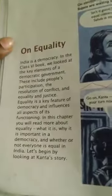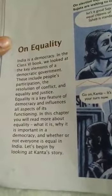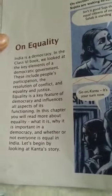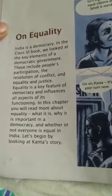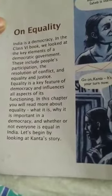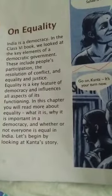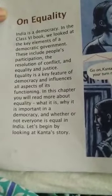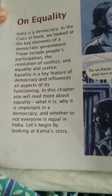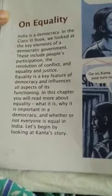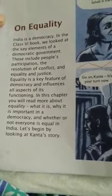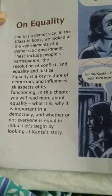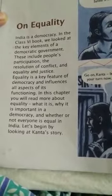Now we are going to learn about another topic in this chapter. This includes people's participation. The elements of democratic government are: first, people's participation through elections; second, the resolution of conflicts; and third, equality and justice. Equality is a key feature of democracy and influences all aspects of its functioning. In this chapter, you will read more about what equality is, why it is important in democracy, and whether or not everyone is equal in India.